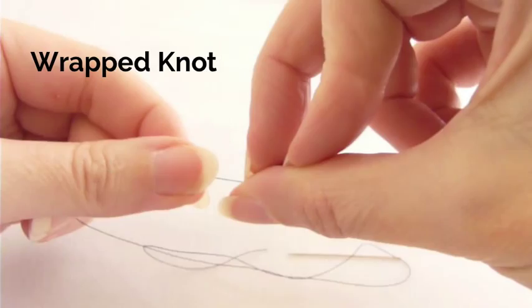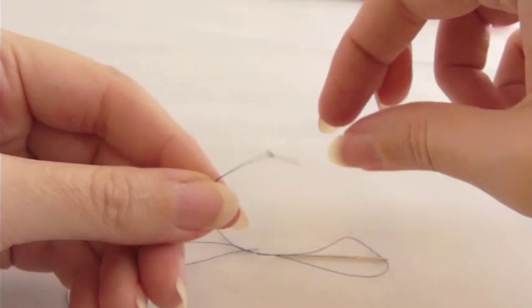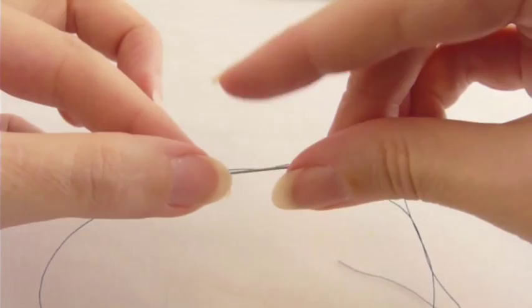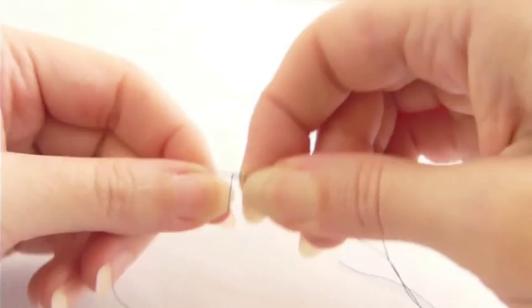The other knot's called a quilter's knot, and so you thread your needle, and then you hold the end of the thread and the threaded needle so they're pointing at each other. Then you hold the needle alongside the thread, and you wrap the thread about five times around the needle. Just hold the wraps and the needle together with one hand, and pull the needle through them with the other, and that leaves a little knot there.